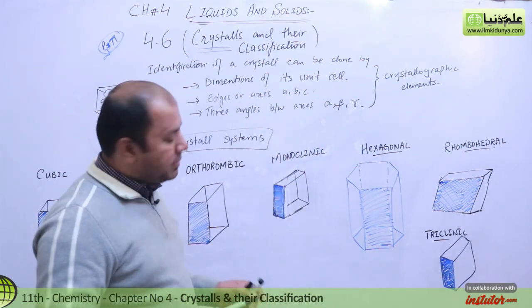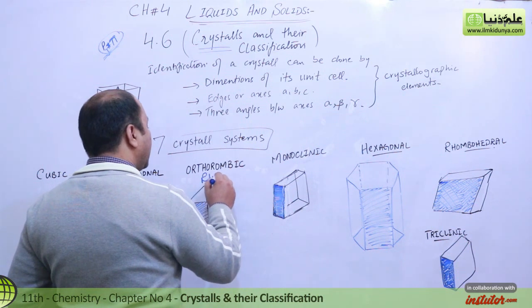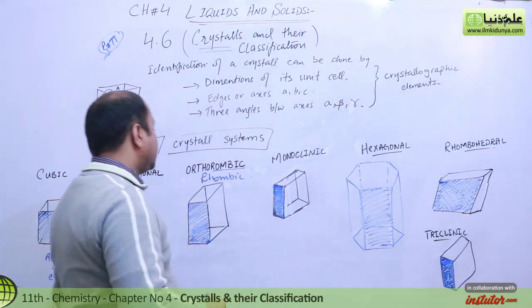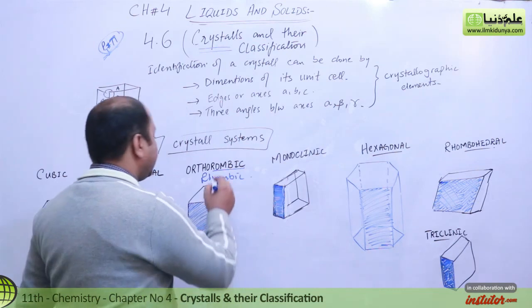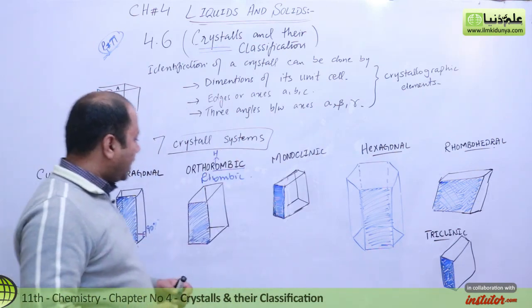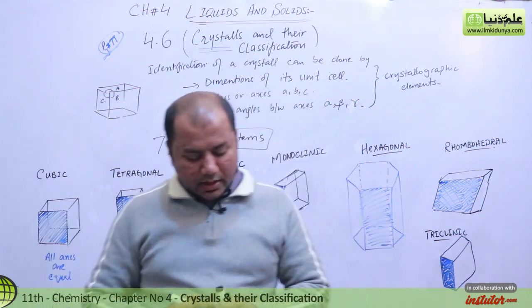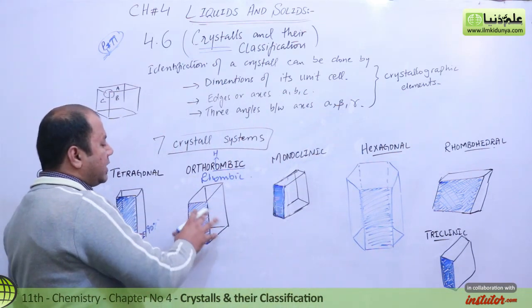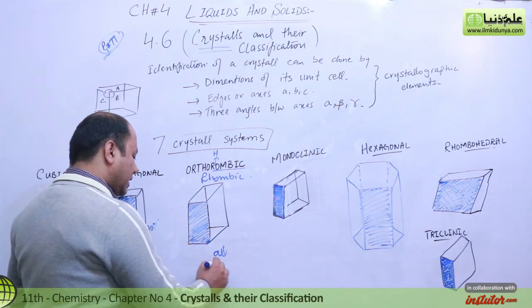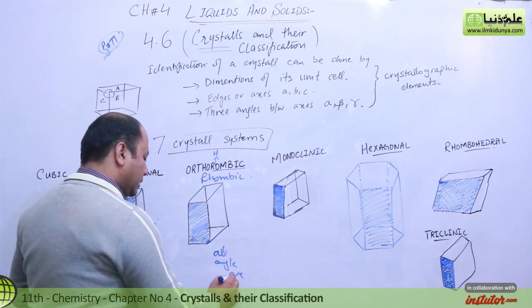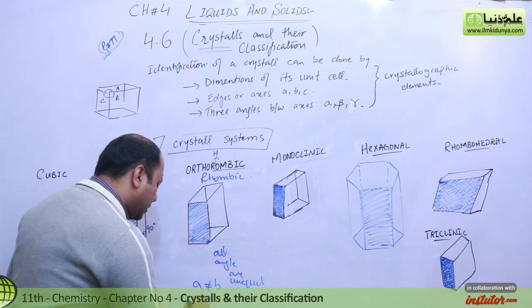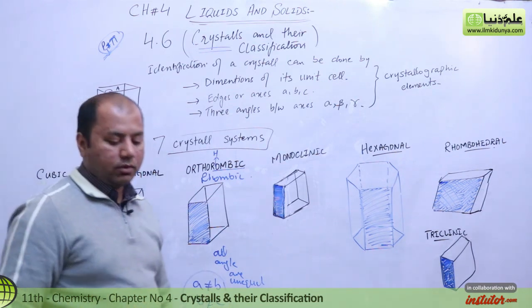Then we have the orthorhombic system, also called rhombic. In the orthorhombic system, all three axes are unequal — A is not equal to B, B is not equal to C, and C is not equal to A — and all are at right angles to each other. All angles are 90 degrees, but all axis lengths are unequal to one another.